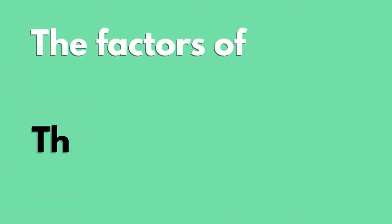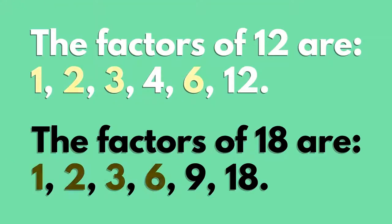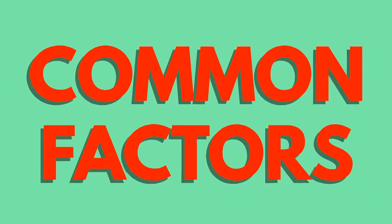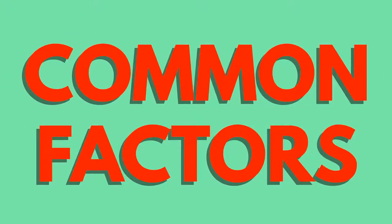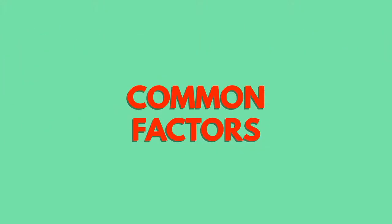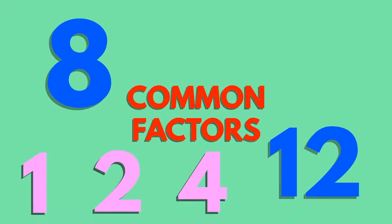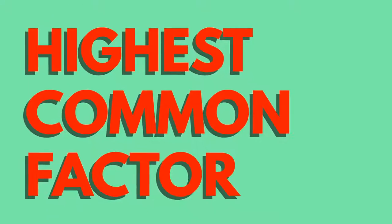When you have lists of the factors of two or more numbers, and you find that some appear in more than one list, they are the common factors of those numbers. The common factors here are 1, 2 and 4. We often take this further and look for the highest common factor, which in this case is 4. The highest common factor is useful for cancelling fractions when you factorise algebraic equations.